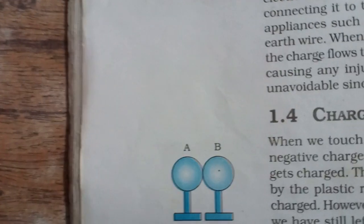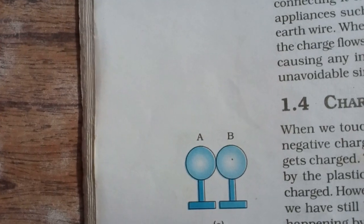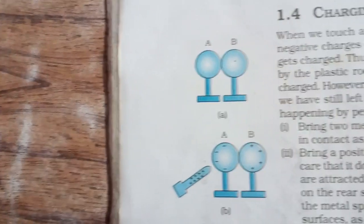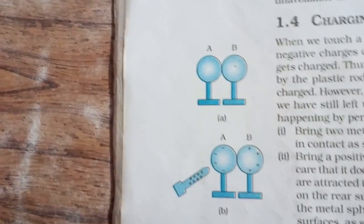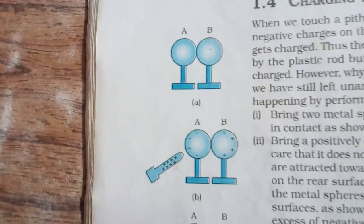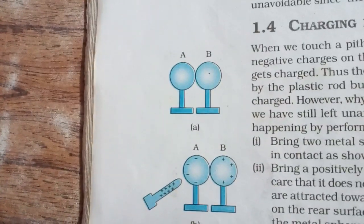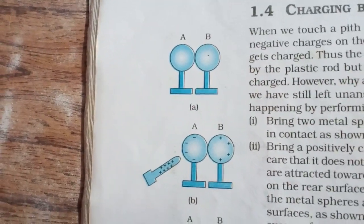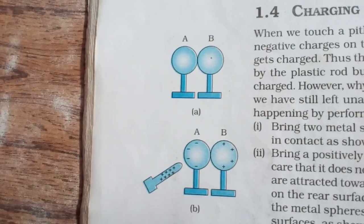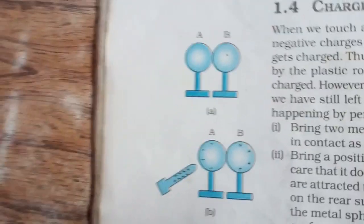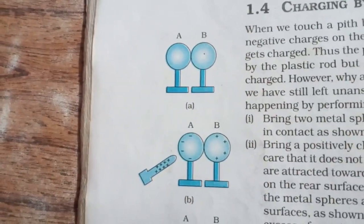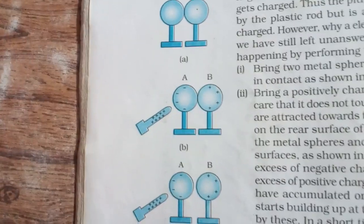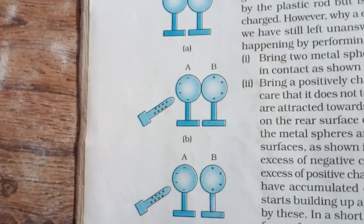In the NCERT book, two metallic spheres are mounted on insulating stands and are first placed in contact. Then a positively charged body is kept near sphere A. The electrons from sphere B move towards A, accumulating on its left-hand side surface. So the left-hand side surface of A becomes negative, and the right-hand side of sphere B becomes positive, because the positive charge of the charged body is attracting free electrons.